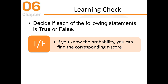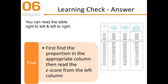True or false: If you know the probability, you can find the corresponding z-score. The answer is true — you can use the unit normal table both ways. If you know the z-score, you can find the probability. If you already know the probability, you can find the z-score. You have to get used to reading the table right to left as well as left to right.